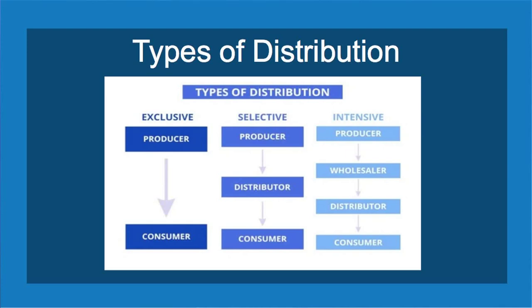In the first channel, we call it direct marketing, where the producer directly sells goods to customers. In the second channel, there is only one middleman — a distributor or retailer. In the third channel, the wholesaler plays a major role in the distribution channel.